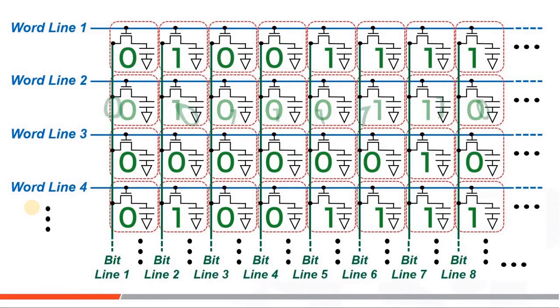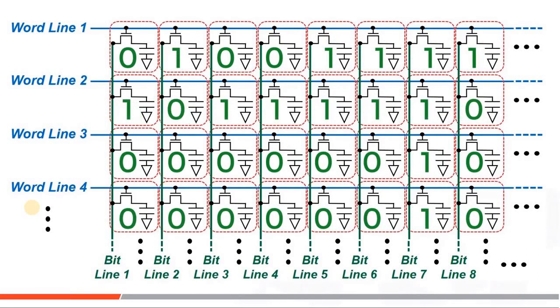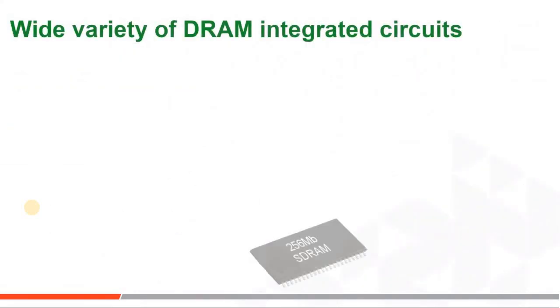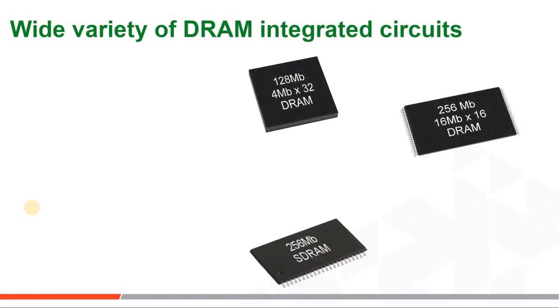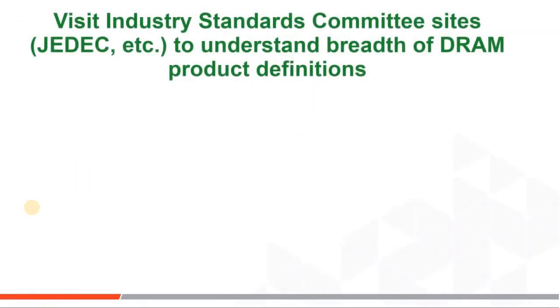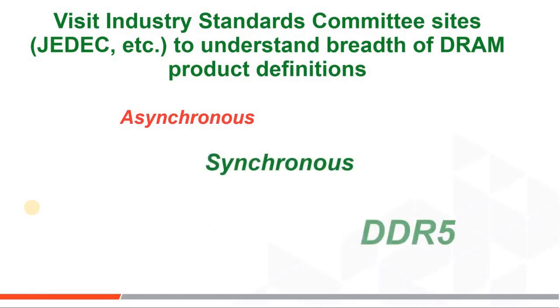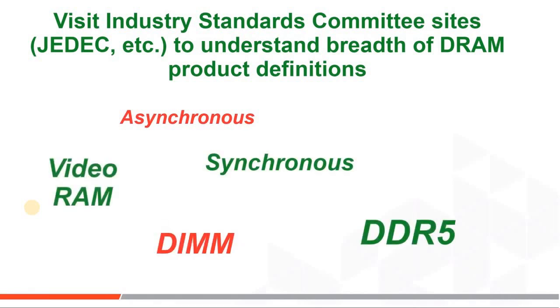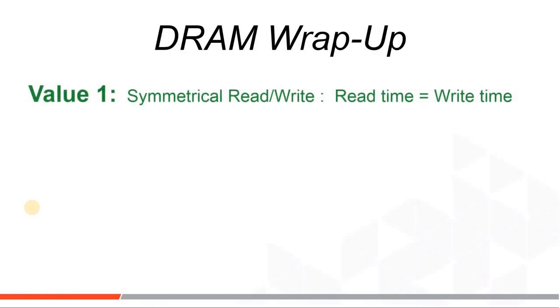In DRAM, memory bits can be read or written infinitely without damage to the structure and without losing content — that is different from flash, which has a destructive write and erase operation. There are microcontrollers that include DRAM blocks inside, but the stand-alone parallel IC DRAM market is huge. Industry standard committees define DRAM interface speeds, clock rates, and bus widths — including asynchronous, synchronous, DDR (double data rate), DIMMs, and video RAMs.